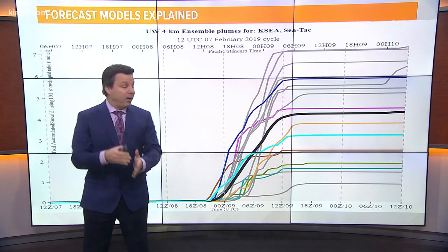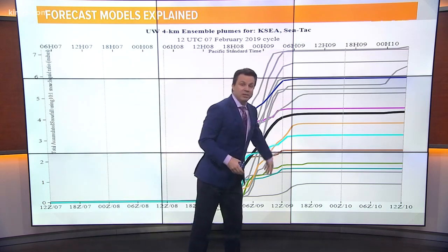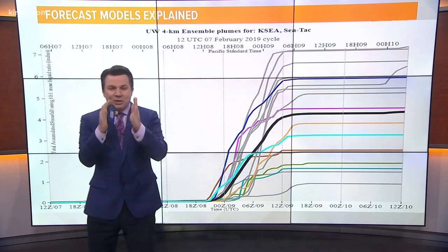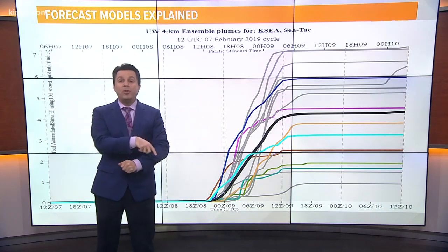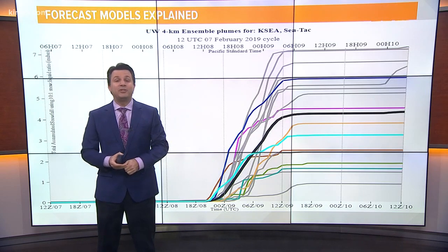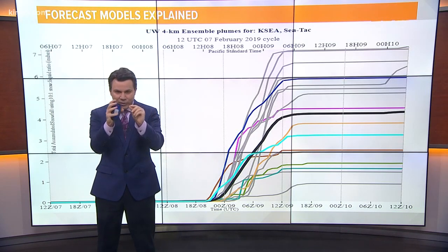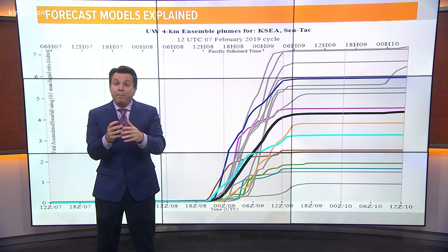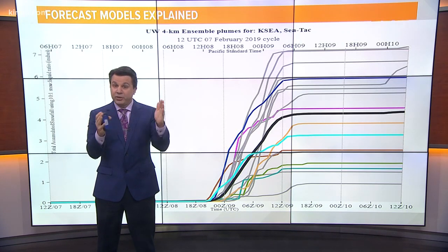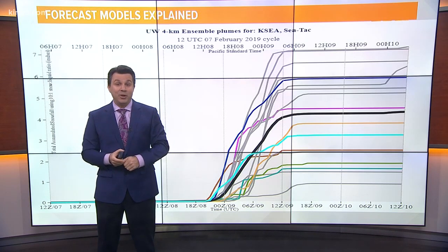So these forecast models, which take us out in time — you see all these wavy lines — they're only as good as the information we put into them to start. And since it's impossible for us to know exactly what every little square inch of the atmosphere is doing on this planet at this moment, we've got to run a bunch of different forecast models with a bunch of different possibilities. And that's why we come up with so many different numbers. And that's why you've seen such different numbers over the last several days.